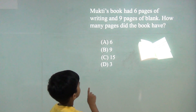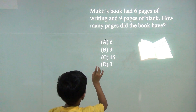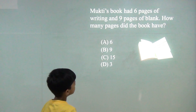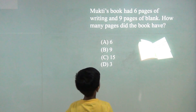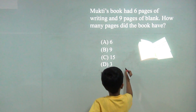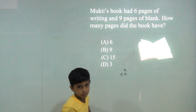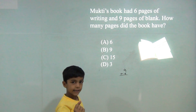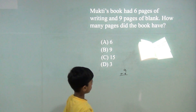Mukurti's book had 6 pages of writing and 9 pages blank. How many pages did the book have? So we will do 9 plus 6. 9, 10, 11, 12, 13, 14, 15. So the answer would be 15.